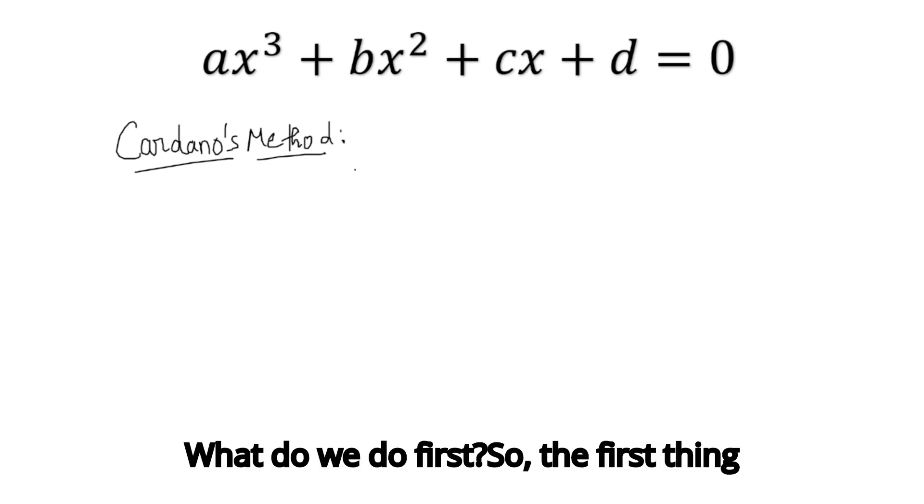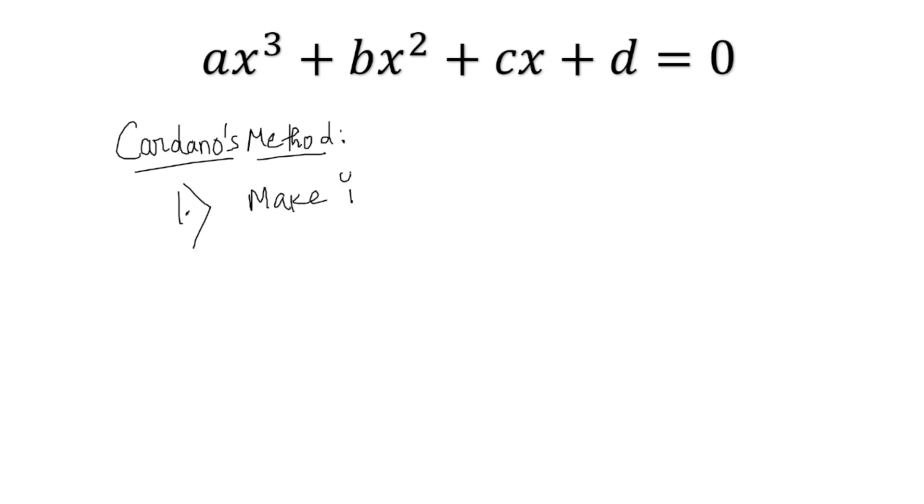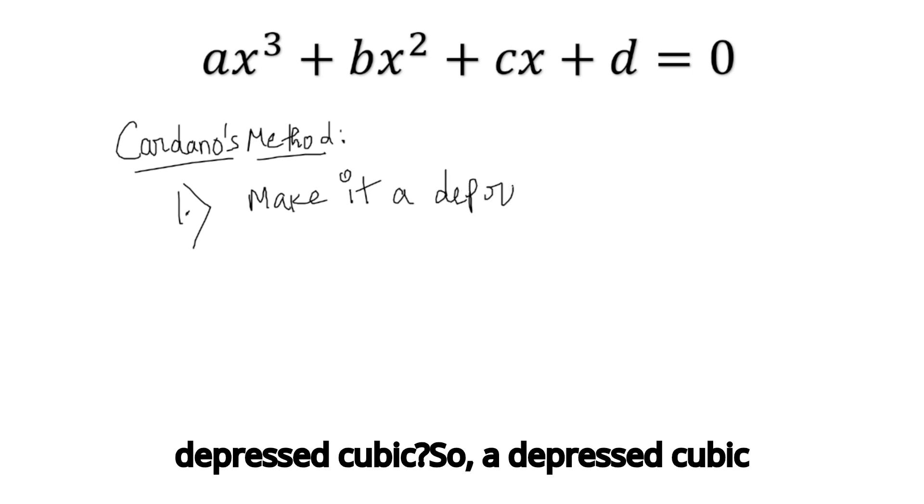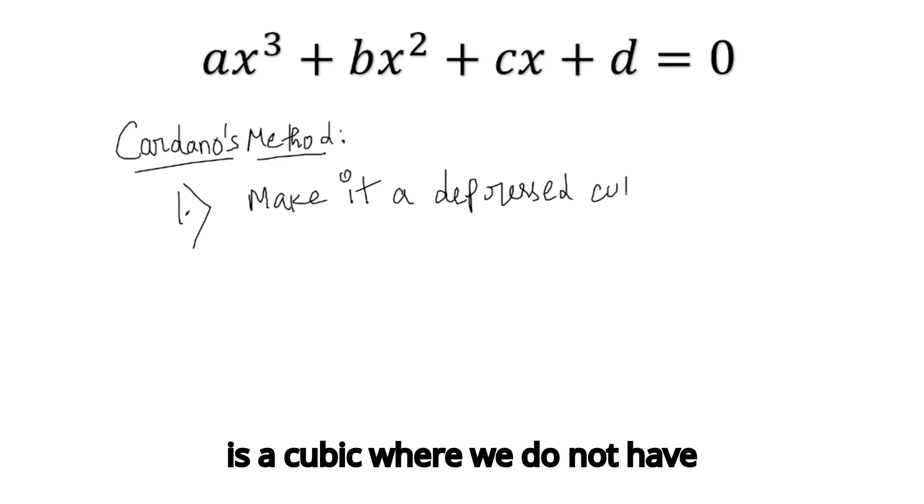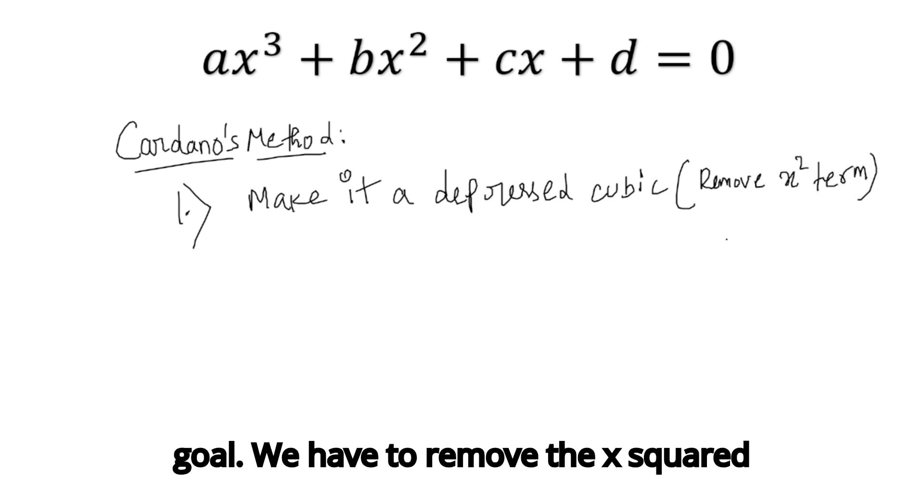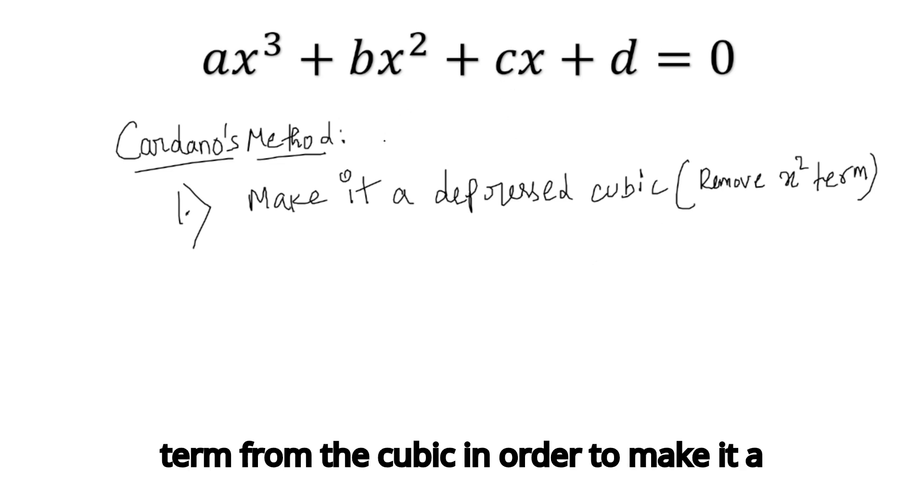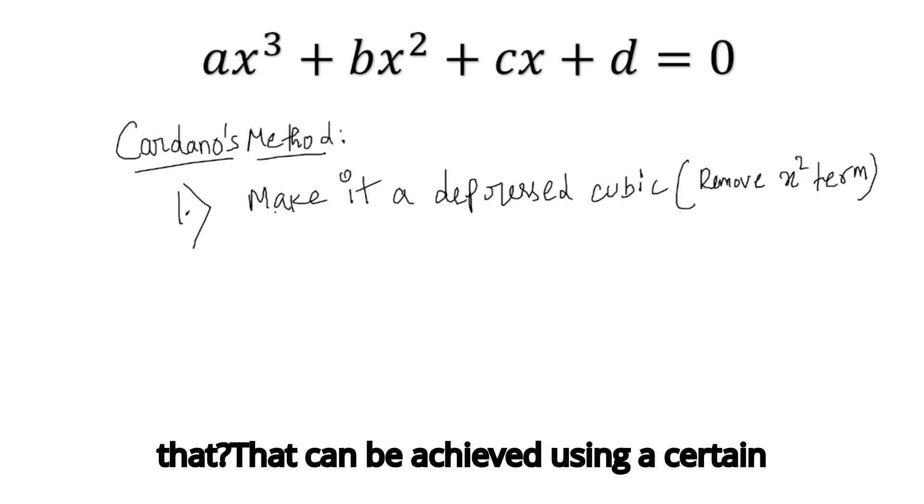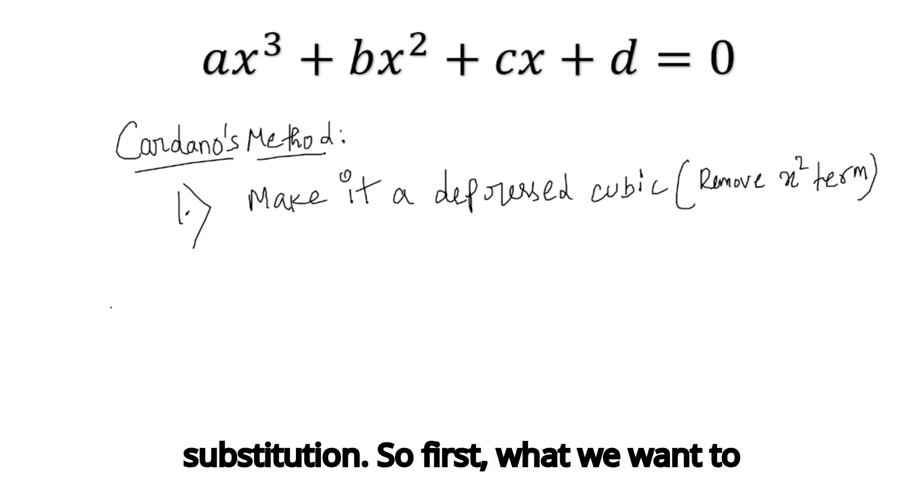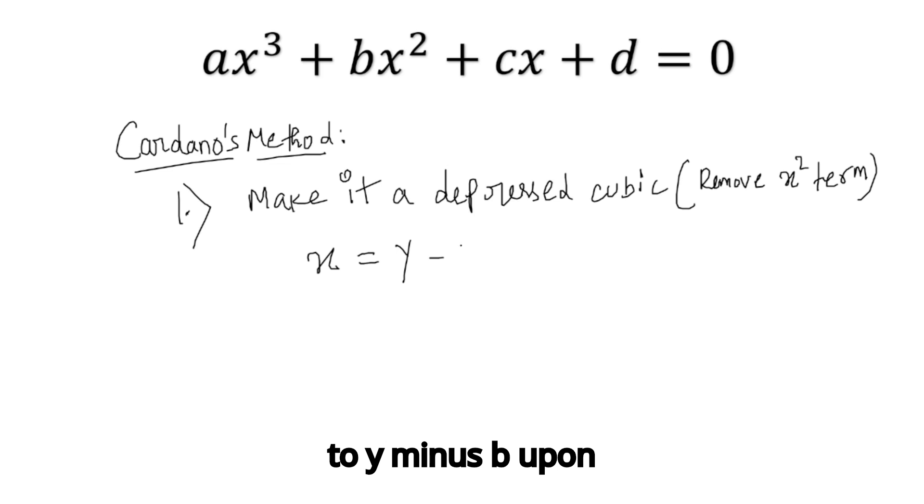What do we do first? Step one for any cubic equation is make it a depressed cubic. A depressed cubic is a cubic where we do not have the x² term. We have to remove the x² term from the cubic. That can be achieved using a certain substitution. We want to substitute x = y - b/(3a), where b and a are given by the coefficients of x² and the leading coefficient.